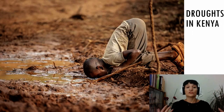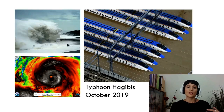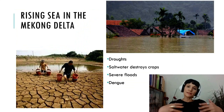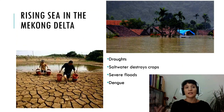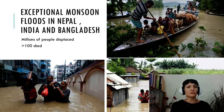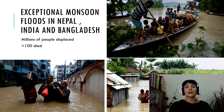Following this, Kenya endured extreme rainfalls for two months which caused severe floods. There were also very big storms like Typhoon Hagibis in October 2019 which occurred in Japan and caused widespread destruction. There are also ongoing problems like the rising sea in the Mekong Delta in Vietnam, where sea water rising is destroying crops and causing hunger and displacement of people, as well as severe floods and problems with droughts and dengue. There have been exceptional monsoon floods in Nepal, India and Bangladesh, causing the displacement and death of hundreds of people.